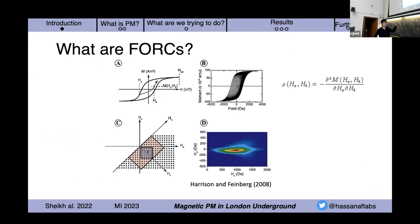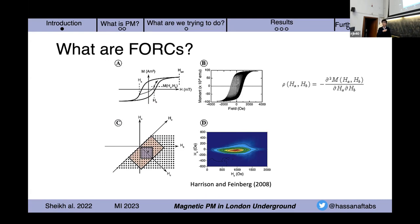We use first-order reversal curves (FORCs), which was one of the techniques we used to distinguish the source of these pollution particles in platforms, train operator cabins, and ticket halls. For those not familiar with FORCs, they're basically partially treasonous loops — you apply a saturation field, then apply a reversal field, then go back to saturation field in steps. You then transform that into a different axis using FORCinel.